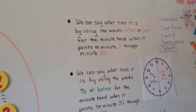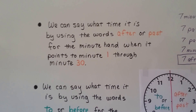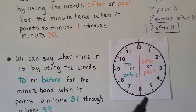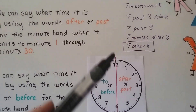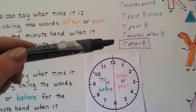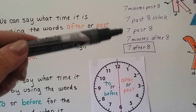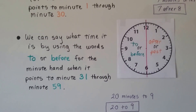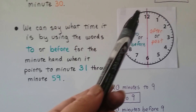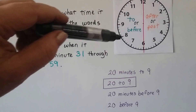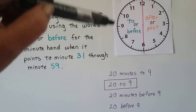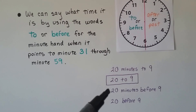We can say what time it is using the words after or past when the minute hand points to minutes 1 through 30. You could say 7 minutes past 8, or 7 past 8, or 7 minutes after 8 — people might shorten it to 7 after 8 or 7 past 8. We use the words to or before when the minute hand points to minutes 31 through 59. For example, if the minute hand was pointing to the 8, we could say it's 20 minutes to 9, or 20 to 9, or 20 minutes before 9.